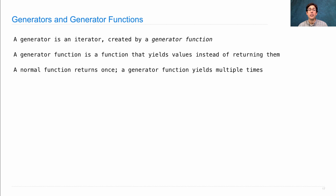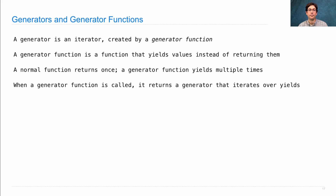A normal function just returns once, while a generator function yields multiple times. When a generator function is called, what you get back is not any of the values that it yields, but instead a generator — an iterator — that iterates over the yields.